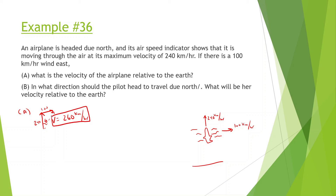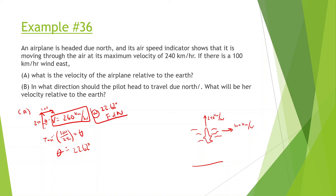Since velocity also includes a direction, we need to find the angle. We do tan inverse of opposite over adjacent: 100 divided by 240, which gives us theta. Calculating that: tan inverse of 100 divided by 240 equals 22.62 degrees. So the direction is 22.62 degrees east of north, because we can see this is north and east of north.